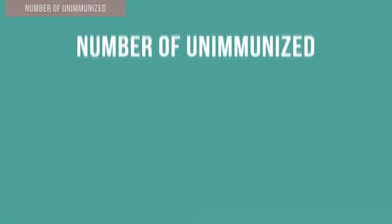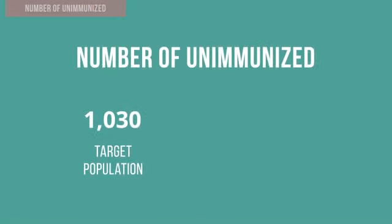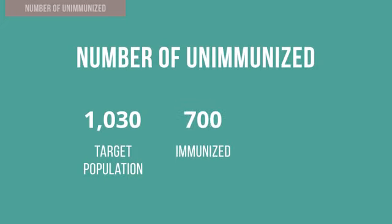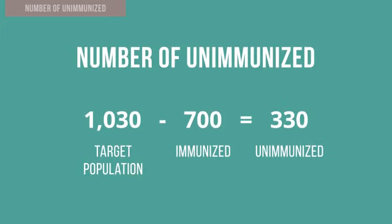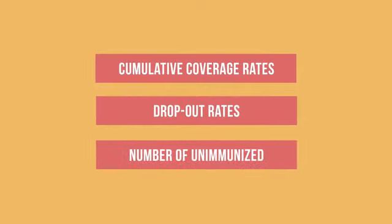For example, if there are 1,030 infants in the target population and 700 infants have been immunized with pentavalent 1, that means there are 330 unimmunized infants. It is going to be really helpful for you to have a chart that shows how the communities, health facilities, or districts in your area are performing against these three measurements.